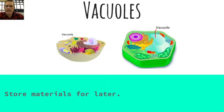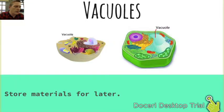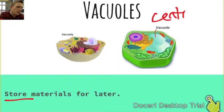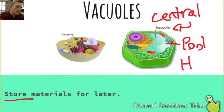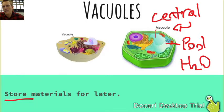Vacuoles are essentially storage — they store materials for later. One thing to know is that plant cells have a huge central vacuole, which I like to refer to as 'the pool' because it holds water. Plants store a lot of water in their cells, specifically in the central vacuole.